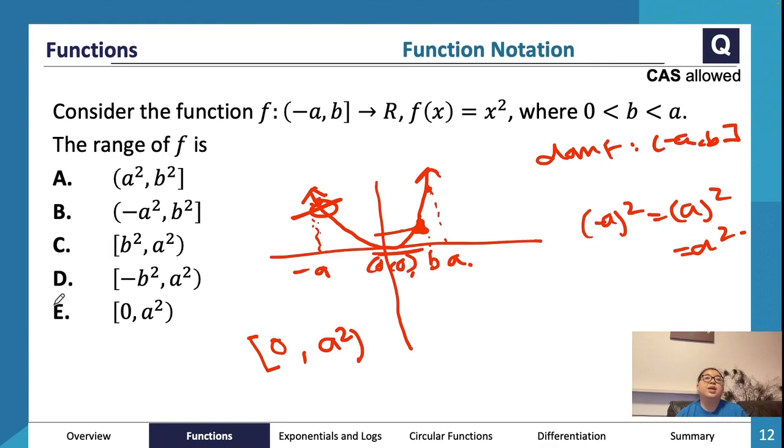We can see that it's going to be option E here. It is really useful to graph it out.